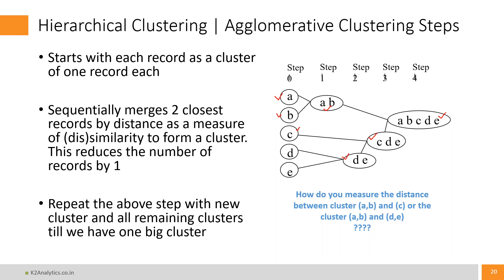The key question in this agglomerative approach is: I can understand how to compute distance between A and B when each is one entity with its own attributes — I can do (X2−X1)² + (Y2−Y1)² + (Z2−Z1)². However, the moment AB gets merged, how do I compute distance between the cluster AB and C? Because in cluster AB, attribute of A is (X1, Y1, Z1) and attribute of B is (X2, Y2, Z2), while C has (X3, Y3, Z3). How do I compute distance between AB, which has two objects, and C? This is where linkage algorithms come into play.